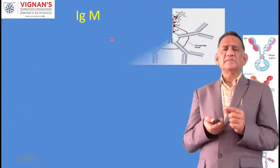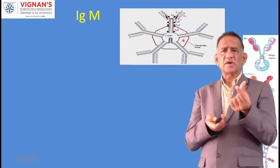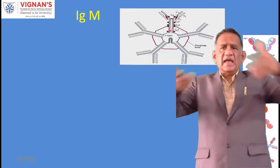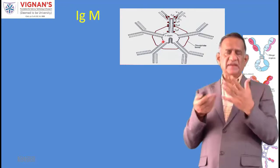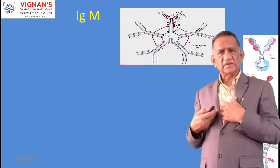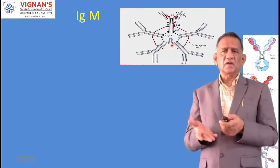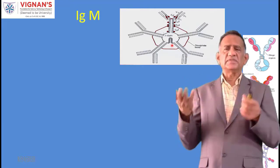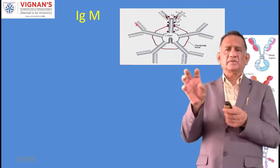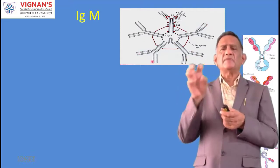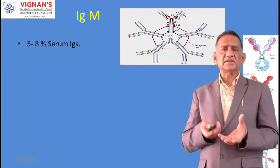IgM is the pentamer, as seen in the video. Because of its pentameric structure with five Fab-containing units, IgM has high avidity - it can bind to multiple antigens simultaneously. When we are infected, we don't have just one viral particle - we have thousands or millions. IgM's five binding sites give it an advantage in binding multiple antigens at once, hence the term 'high avidity' rather than just high affinity.